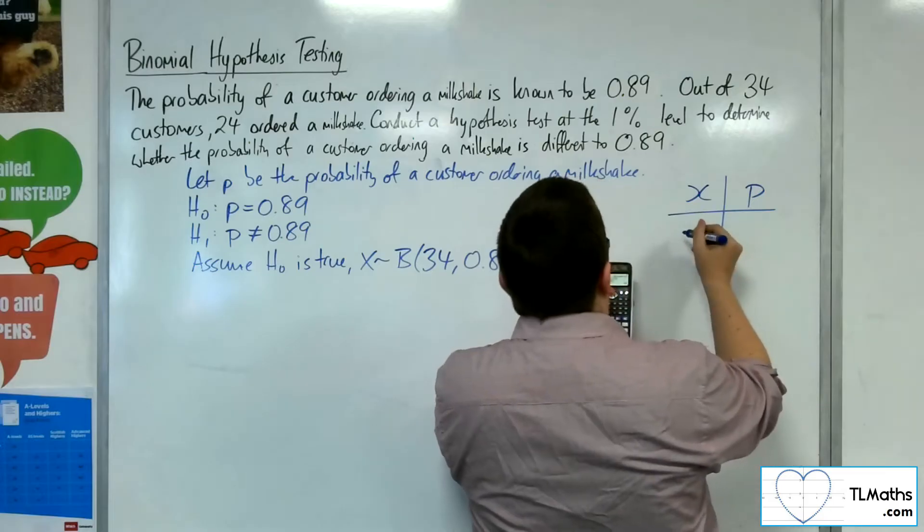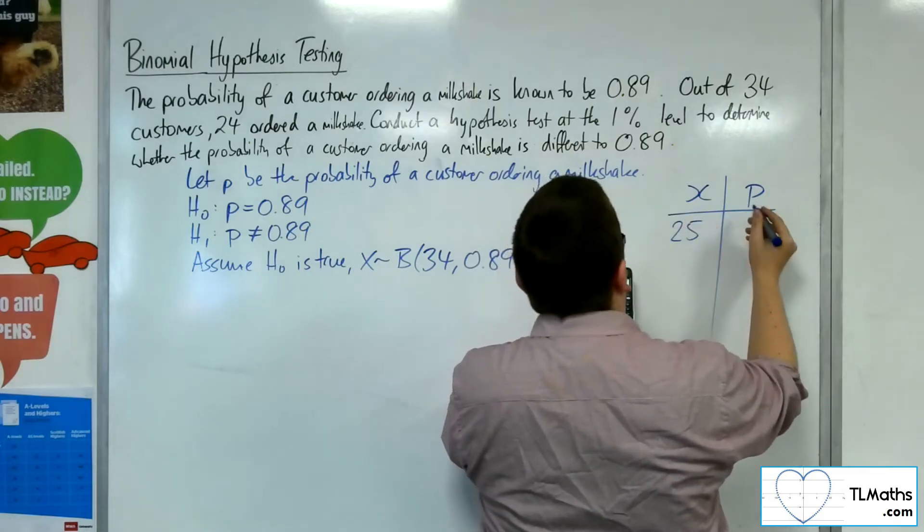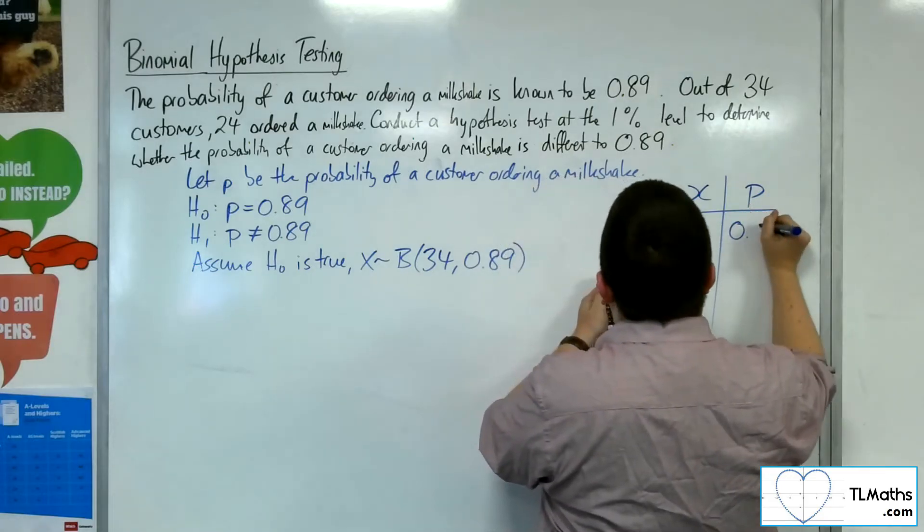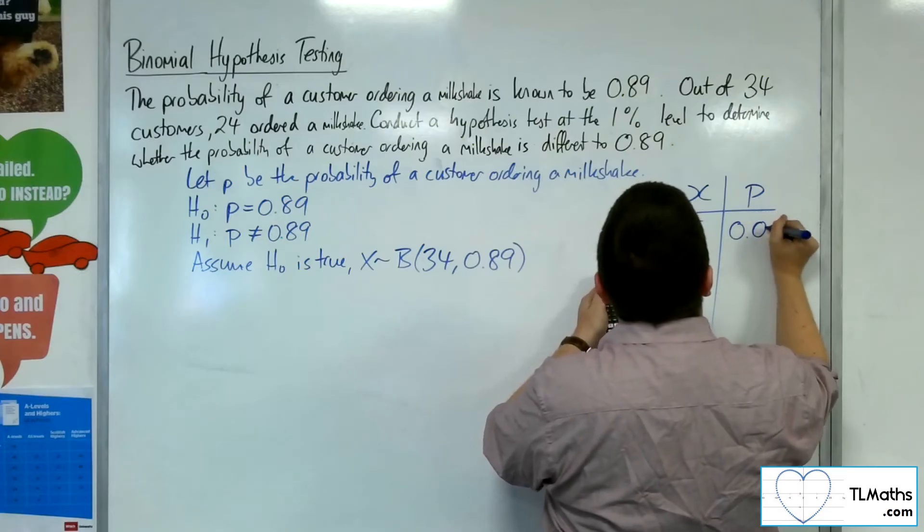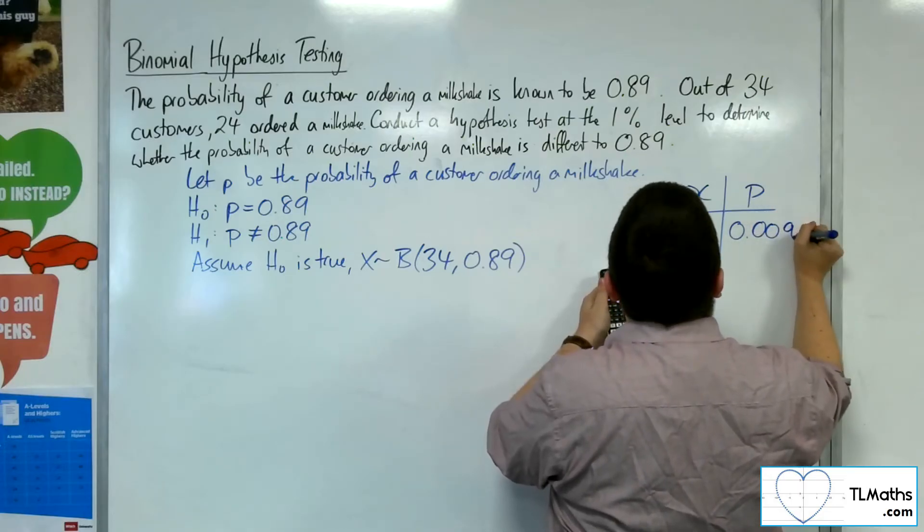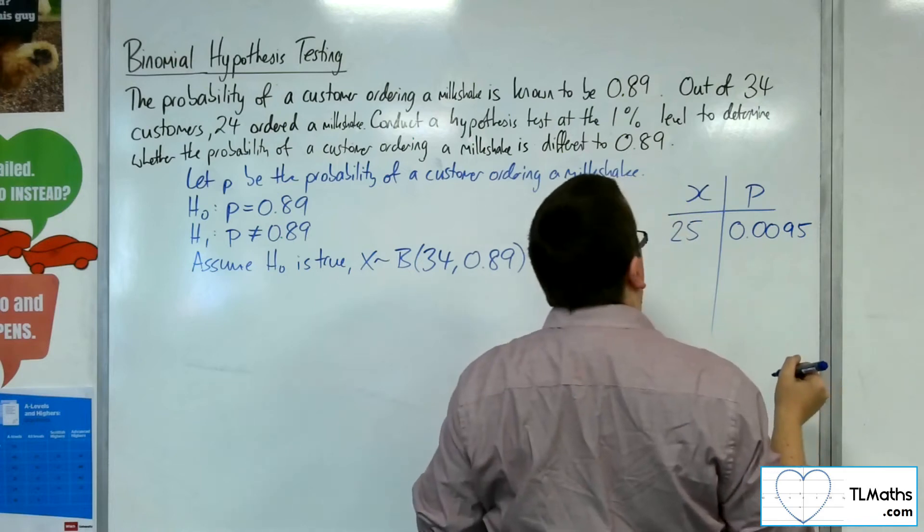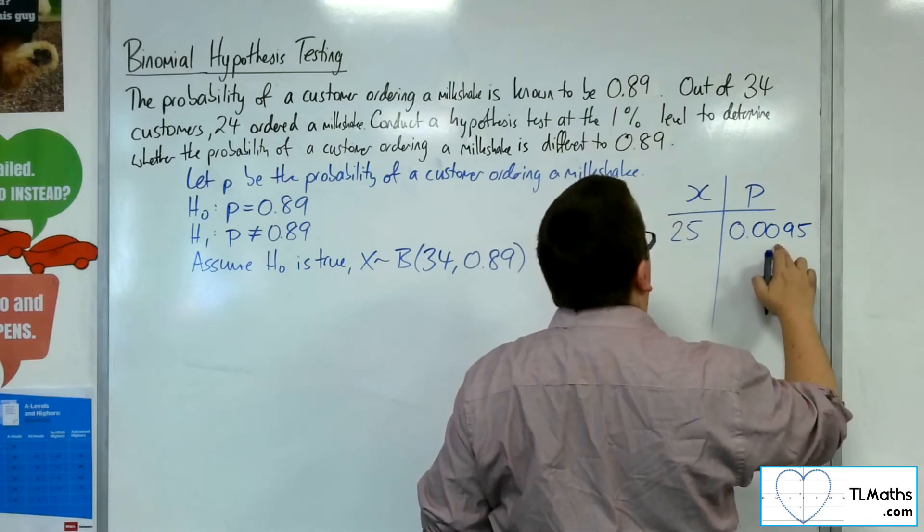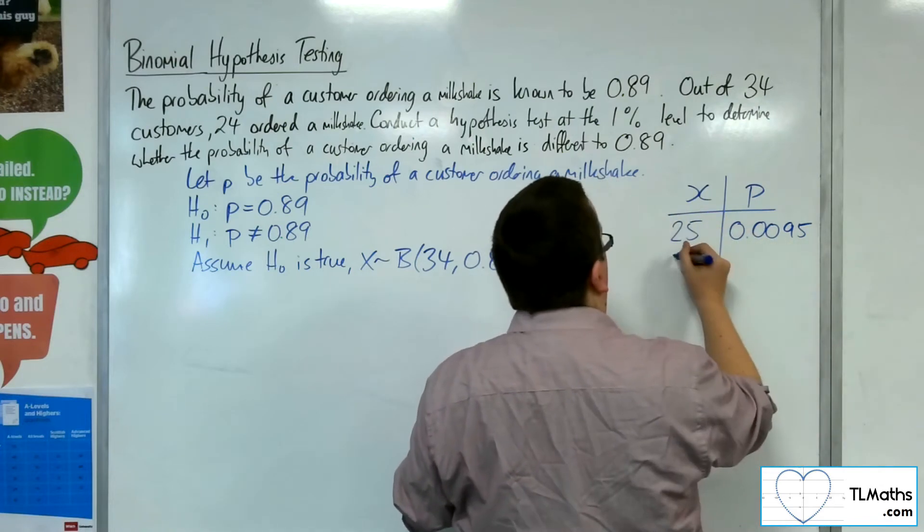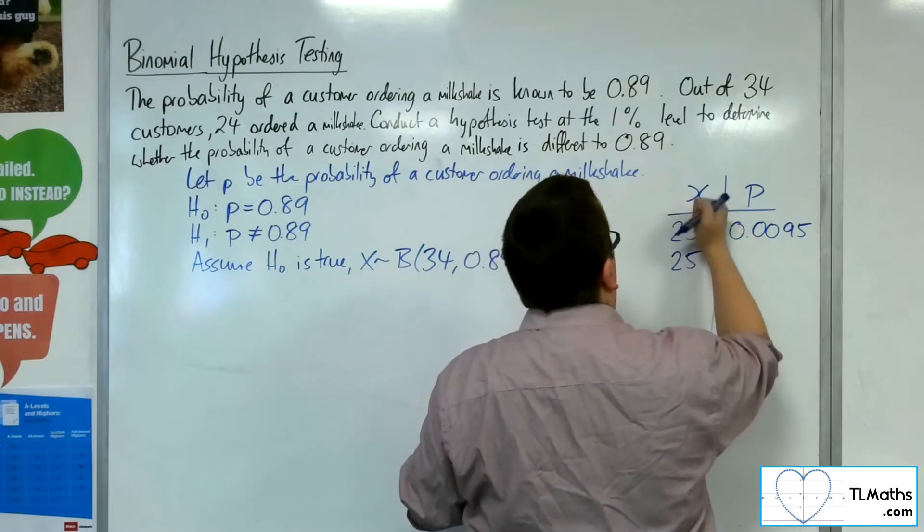I've got here at 25, 9.5 times 10 to the minus 3, so 0.0095. So I actually need one less than that, don't I?